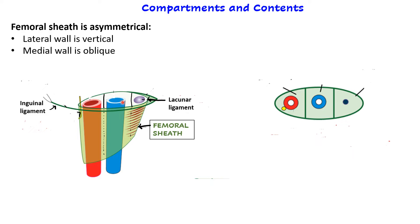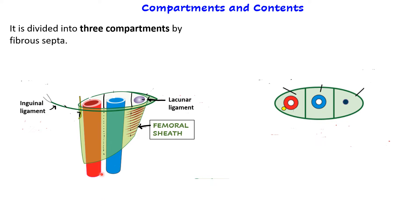The femoral sheath is open above to allow passage of femoral vessels and lymphatics, but closed below because the anterior and posterior walls merge with the adventitia of the femoral vessels.